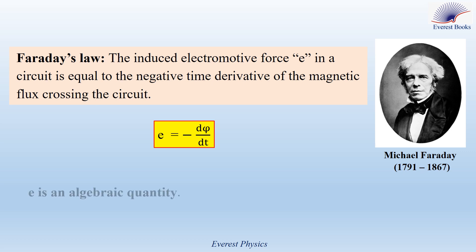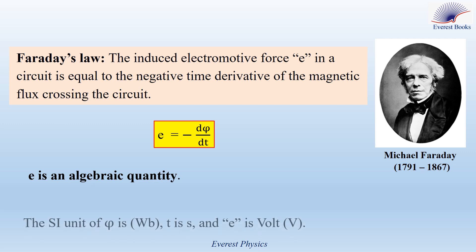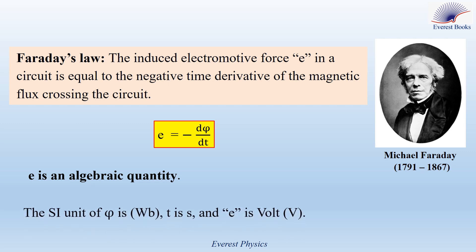E is an algebraic quantity — E could be positive, negative, or zero. The SI unit of the flux is the weber, or T·m², and E is in volts.